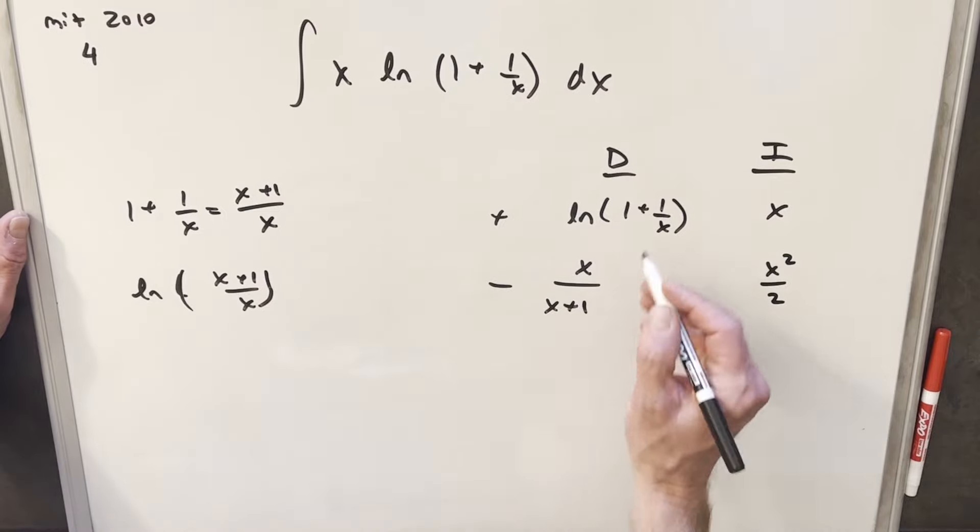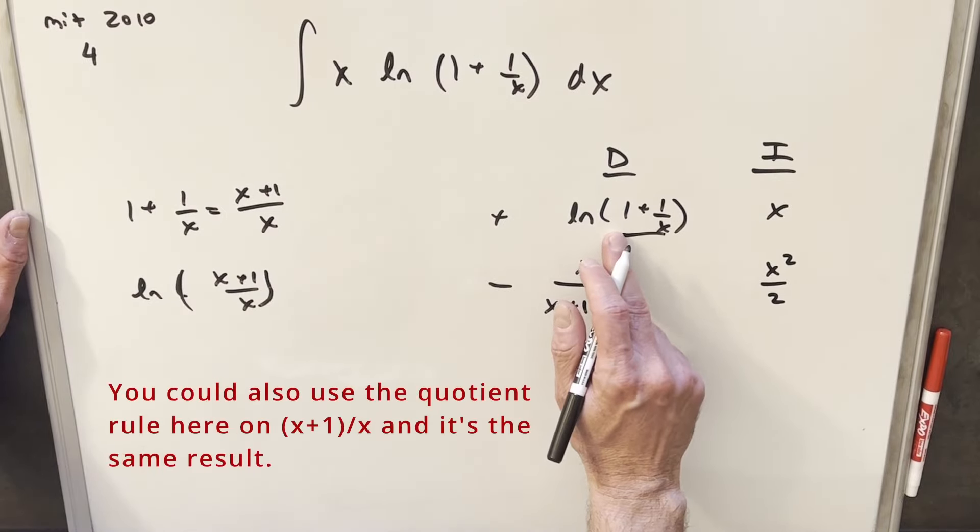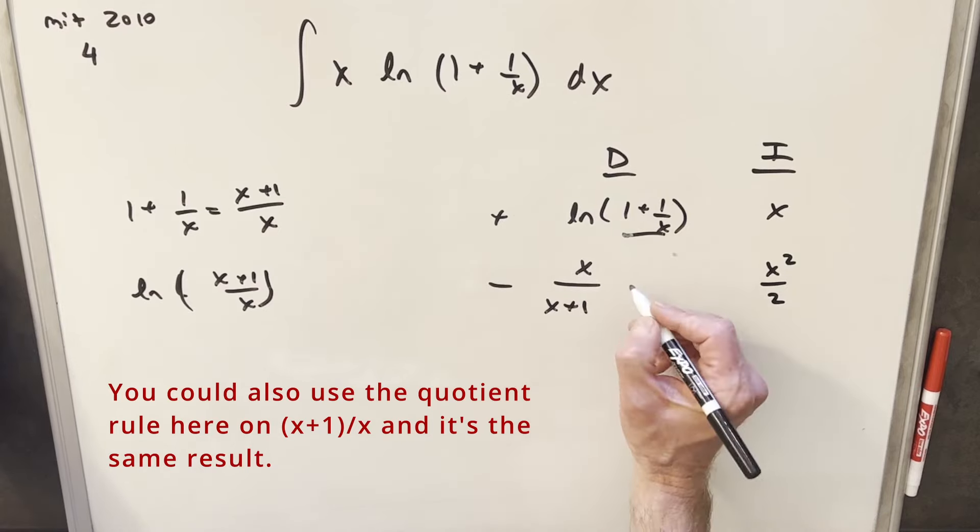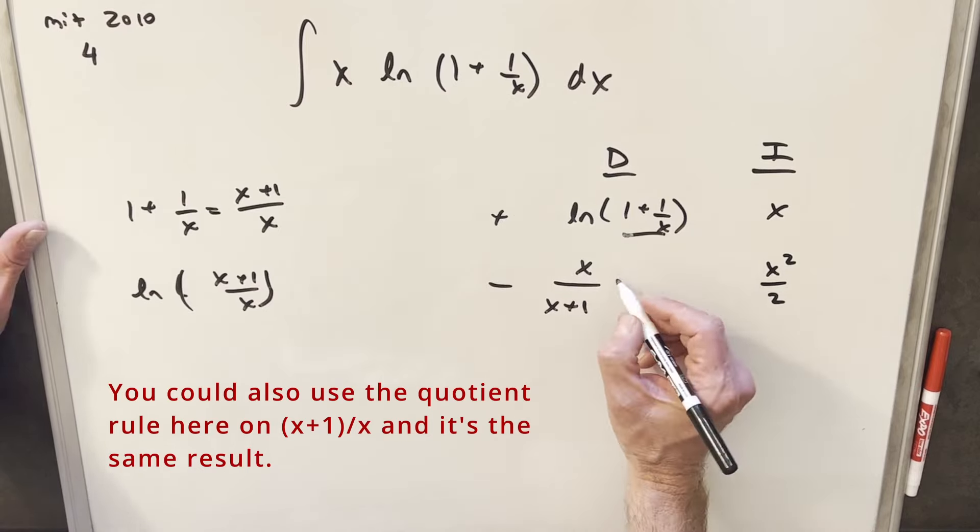But then we need the chain rule, and for the chain rule, I'm going to go back to this. When we differentiate the inner part here, we're going to have derivative of 1, 0, derivative of this is going to be, derivative of 1 over x is going to be minus 1 over x squared.